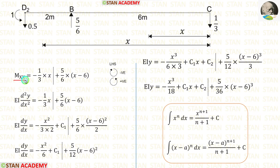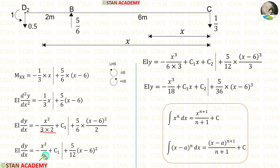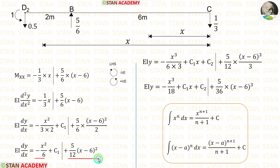Now let us equate MXX with EI d²Y/dX². Let us integrate both sides. When we integrate EI d²Y/dX², we get EI dY/dX. For integrating X we apply the standard formula, and for integrating (X minus 6) we apply the same formula. Using those formulas, C1 is the integration constant. 3 into 2 gives 6, and 6 into 2 gives 12. Let us integrate again: when we integrate EI dY/dX we get EIY. C2 is the new constant. 6 into 3 gives 18, and 12 into 3 gives 36.